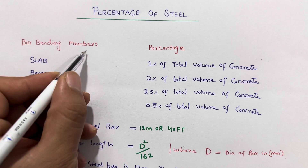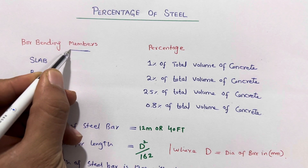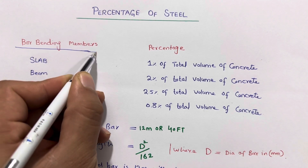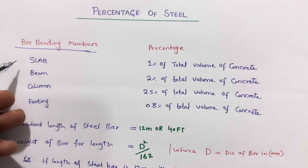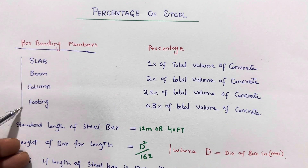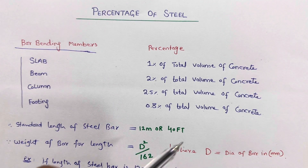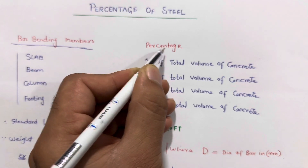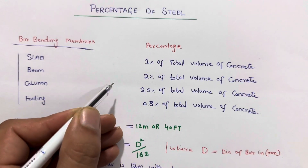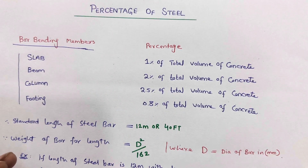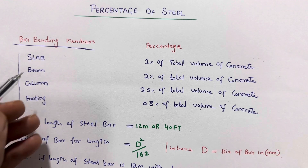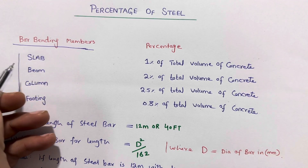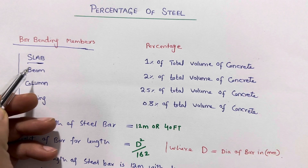As you can see guys, in this column we have bar bending members. In bar bending members we have different RCC structures. At this side guys you can see we have the percentage of steel reinforcement for different RCC structures.